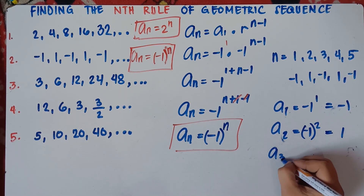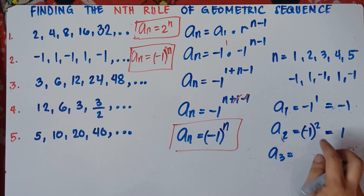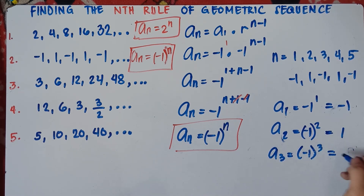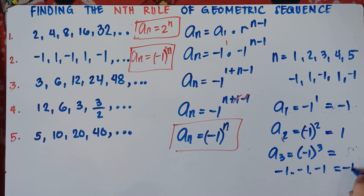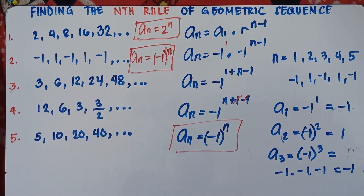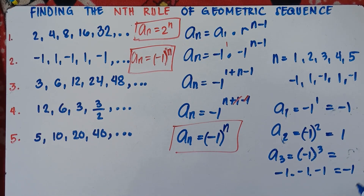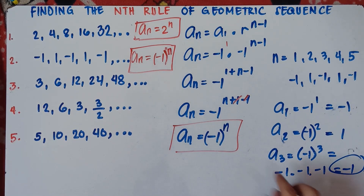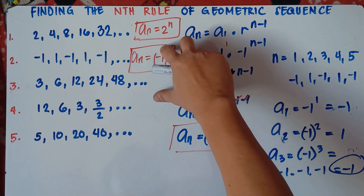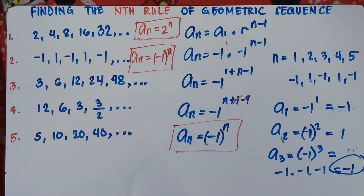If n is 3, a sub 3 equals negative 1 raised to the power of 3: negative 1 times negative 1 times negative 1. Negative times negative is positive, times negative is negative. So 1 times 1 times 1 is 1, giving us negative 1. Even checking the fourth and fifth terms gives the same answer. So this will be your answer: a sub n equals quantity negative 1 raised to the power of n.